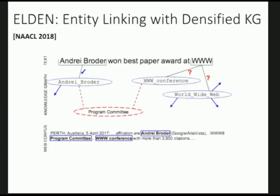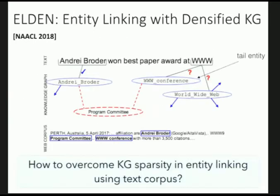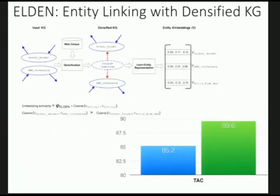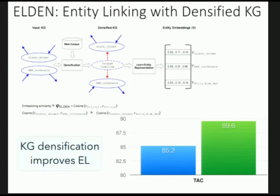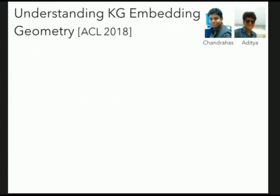We've also done work on entity linking — given text mentions, how do you link them to entities in the knowledge graph. We find that rather than doing entity linking directly on the graph, if you first densify the graph by adding additional nodes and edges from text analysis, embed that densified knowledge graph, and then do entity linking on top, you get a boost in performance. This system is called ELDEN — Entity Linking with Densified Knowledge — and is the state-of-the-art method for entity linking.